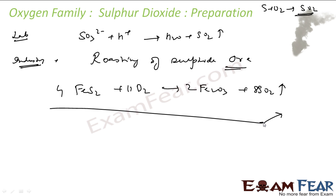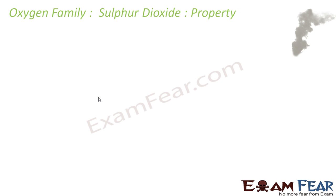Roasting is used to purify or to extract metals from Sulphide Ores. In that process, SO2 is a by-product. Now let's talk about the properties of Sulphur Dioxide.